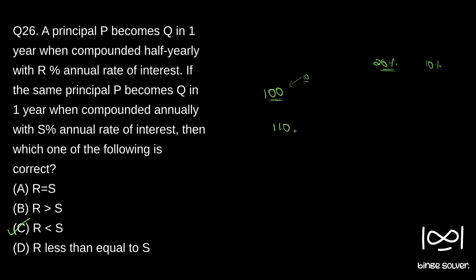Now when one year gets completed, we will add 10 percentage of this to our interest. So 10 percentage of this is 11. So 110 plus 11, which is 121 rupees. So at the end of one year we will have 121 rupees.